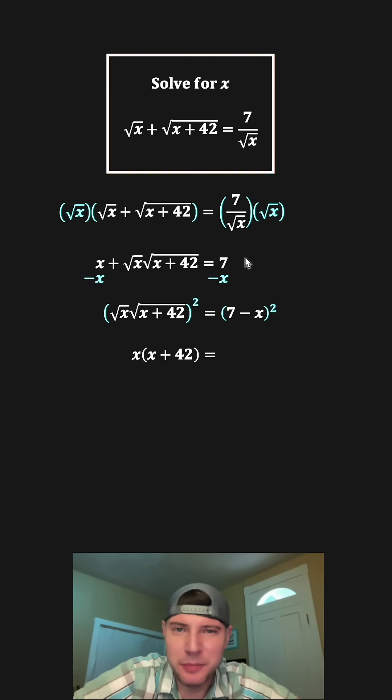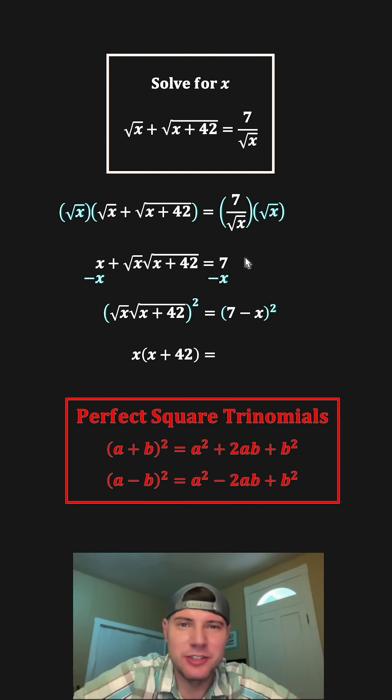Usually I just foil it out, but a lot of people requested these notes, so let's do it. Using these notes, it's going to be this first term squared, which is 49, then you do 2 times this term times this term, which ends up being negative 14x, and then we finish with this term squared, which is x squared.